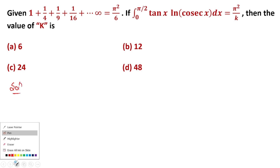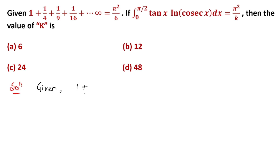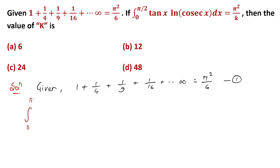We have given: 1 + 1/4 + 1/9 + 1/16 + ... up to infinite equals π²/6. यह हमारे पास दिया है, मालने पे है equation। Now the integration we have is from 0 to π/2 of tan(x) · log(cos x) dx = π²/k.